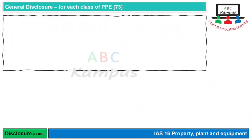Welcome to ABC News, welcome to ABC Campus. Aaj hum IAS 16 Property, Plant and Equipment mein Disclosures ko discuss karenge. Sabse pehle aise General Disclosures ko discuss kar rahe hain jo tamam Property, Plant and Equipment ki Classes par apply hote hain, aur har class ke liye ye disclosures separately dene hote hain.